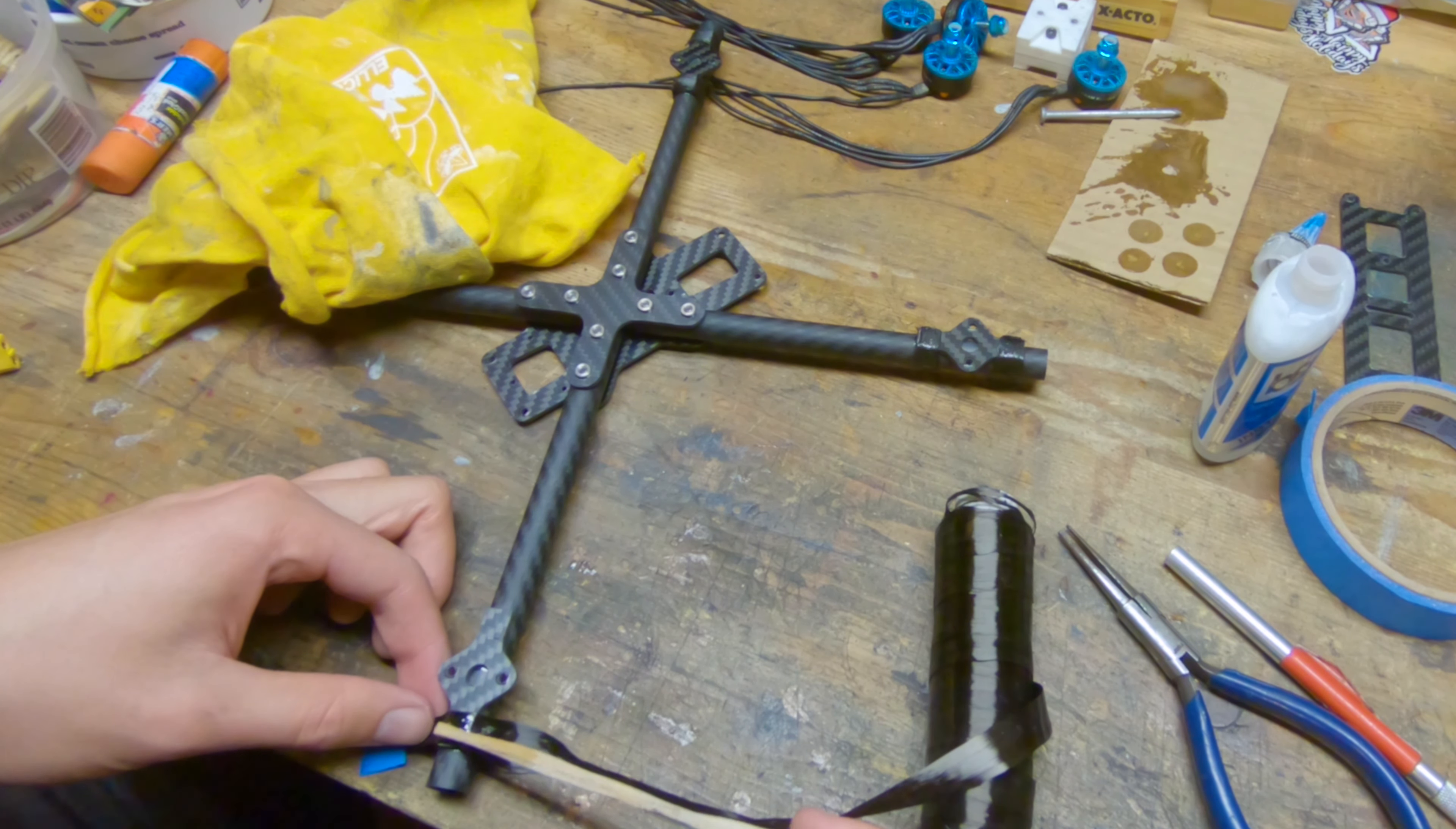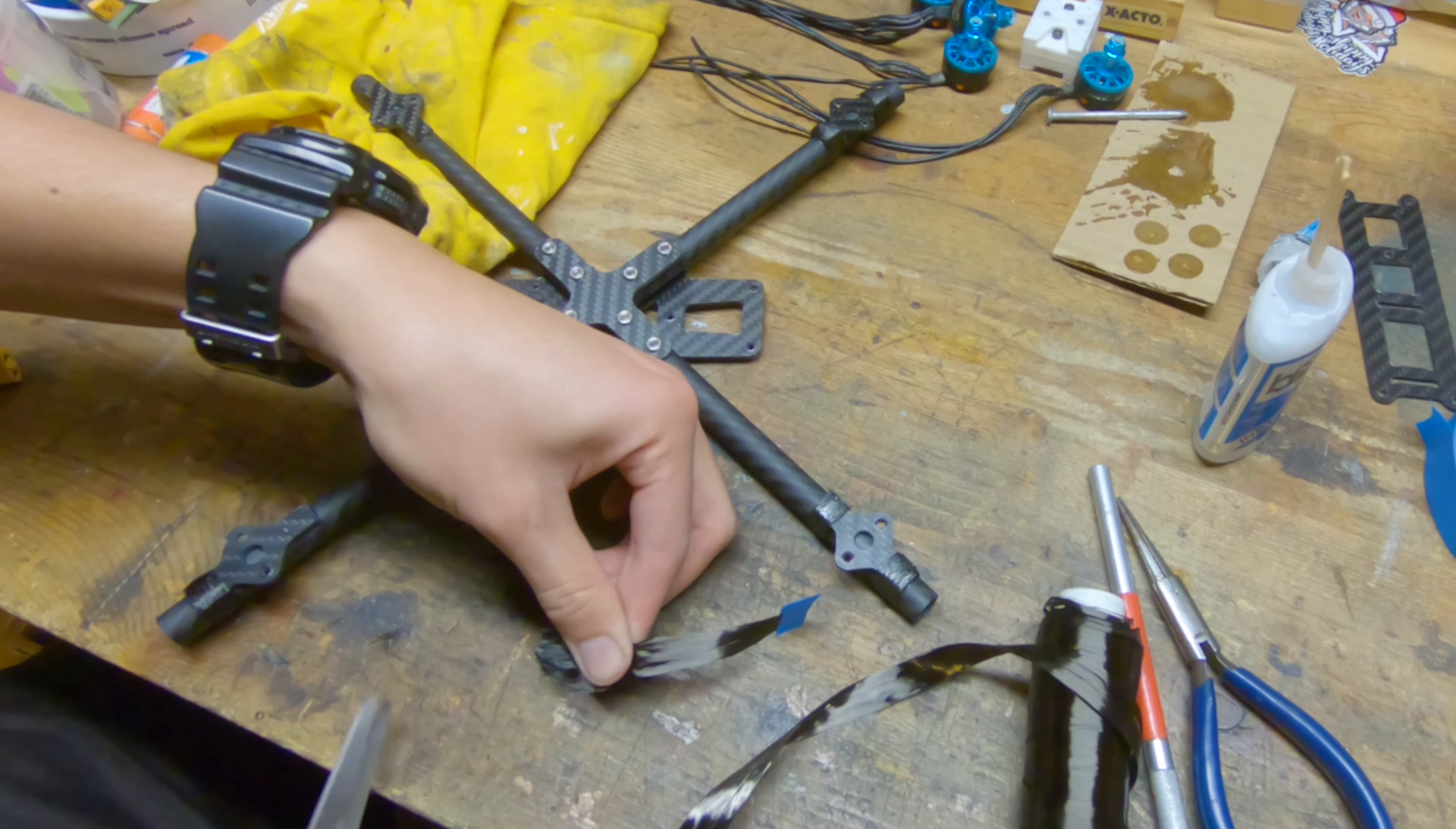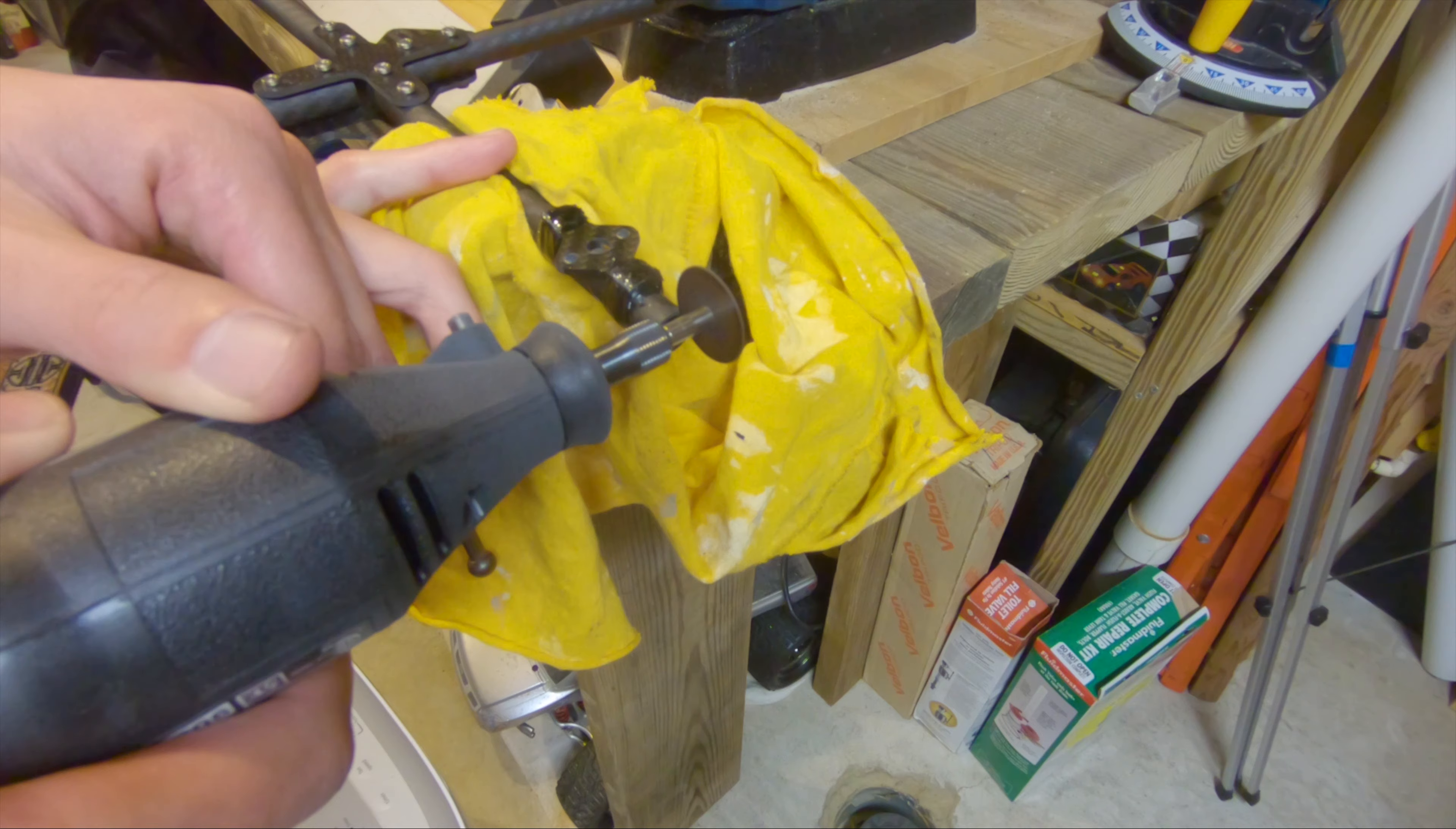Now I'm using carbon tow and wrapping it around the tabs on the motor mounts. You can see I use super glue to tack the carbon tow in place. Then I'm measuring out some epoxy laminating resin which is thinner than normal epoxy, and I'm soaking this into all of those carbon fibers. This is what really gives the motor mount strength.